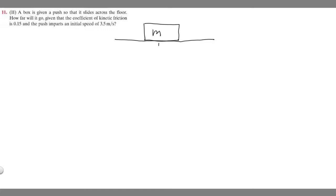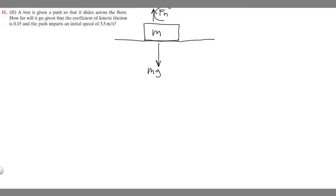That's the first thing we want to label. We know we have the weight force going straight down, which is just the mass times gravity. We also know it's going to have a normal force acting upwards, perpendicular to the surface it's on, going straight up — we call this F sub n. And we know it's going to have a force of friction. We're assuming it's moving to the right, so the force of friction is going to go in the opposite direction, because it's a force making it harder to move in the direction it's trying to go.